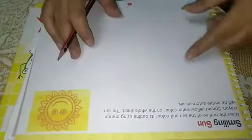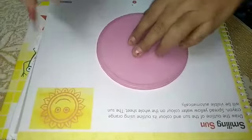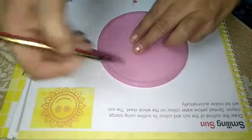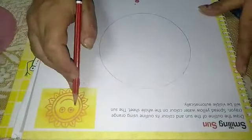So firstly take any round thing to make sun. You can use compass also. If you are not having compass, take any round object and make a circle. Now our outer circle is ready.